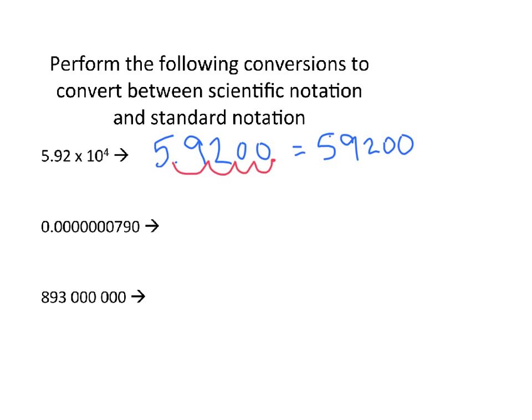For the second and third one, we're going to be going the other way. We're going to actually be asked to convert the standard notation into scientific notation. The first thing we need to do is we need to move the decimal place in such a way where we create a number between 1 and 10.